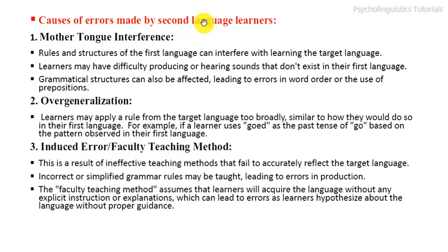The first cause of errors made by second language learners is mother tongue interference. The rules and structures of the first language can interfere with learning the target language. Learners may have difficulty producing or hearing sounds that do not exist in their first language, and grammatical structures can also be affected, leading to errors in word order or the use of prepositions.